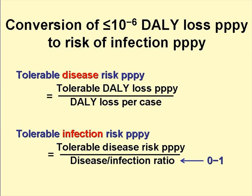We have to convert this 10 to the minus 6 DALY loss per person per year to something we can use. First, we determine the tolerable disease risk by dividing the 10 to the minus 6 DALY loss per person per year by the DALY loss per case of the disease in question, and then we calculate the tolerable infection risk by dividing the tolerable disease risk by the disease-to-infection ratio, which is somewhere between 0 and 1, as not everybody who is infected becomes ill.